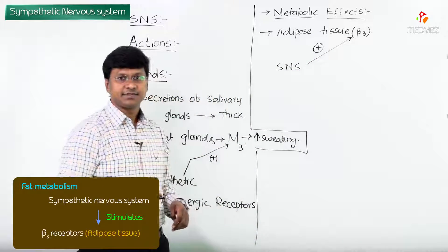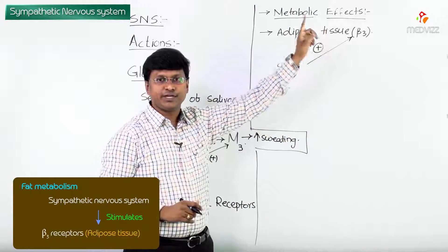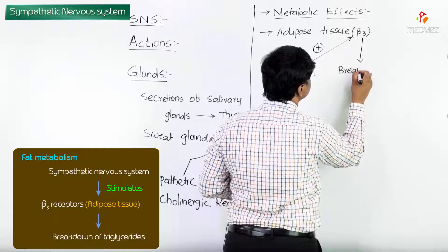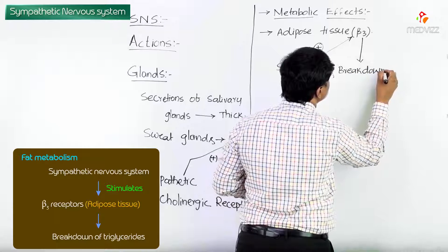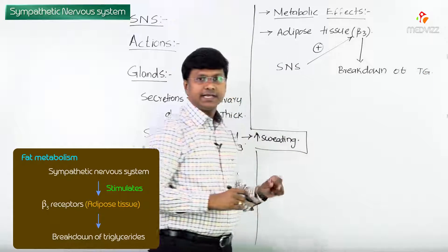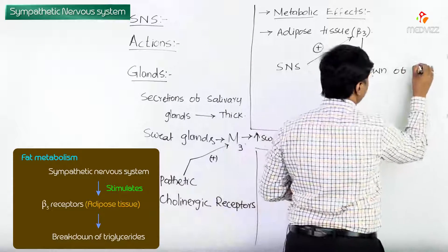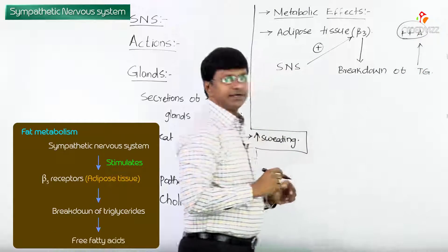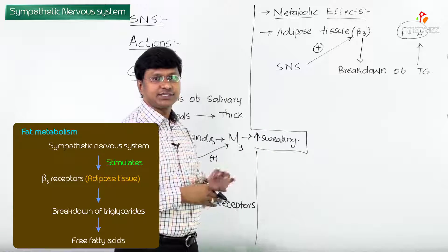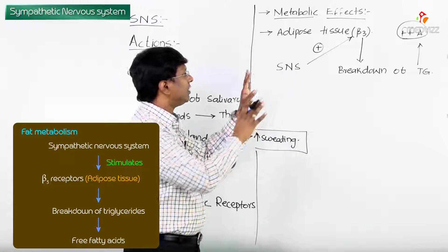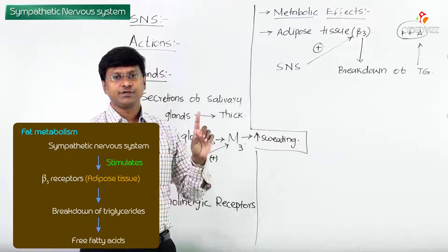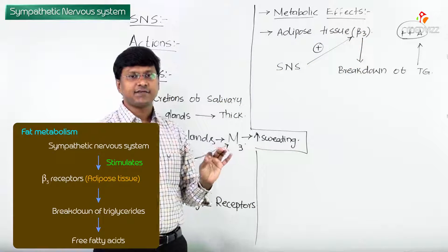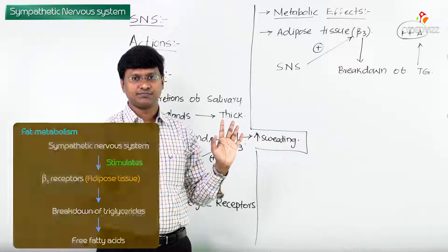So to summarize the fat metabolism effect: the sympathetic nervous system stimulates the beta-3 receptors, which causes the breakdown of triglycerides to free fatty acids. That is the effect of the sympathetic nervous system on the adipose tissue and fat metabolism.